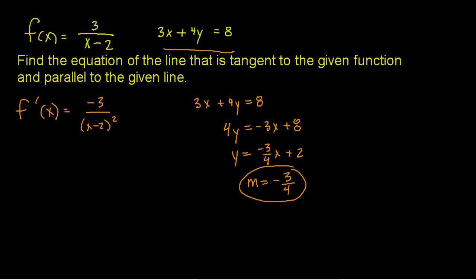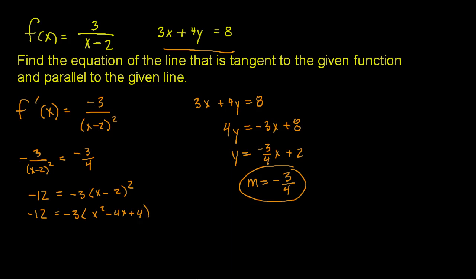I don't know the points of tangency, but I do know the slope at those points. I'm going to take my derivative, set it equal to my slope negative 3 fourths, and solve for x. I know there are going to be two answers. First thing I'm going to do is cross multiply — that gives me negative 12 on the left and negative 3 times x minus 2 squared on the right. Now I'll square that out: x minus 2 squared is x squared minus 4x plus 4.